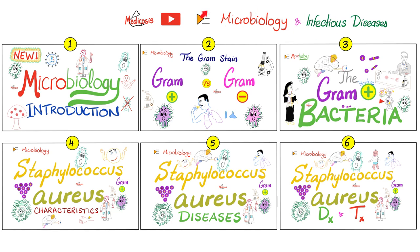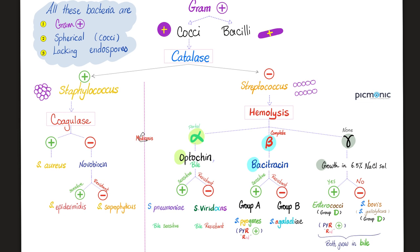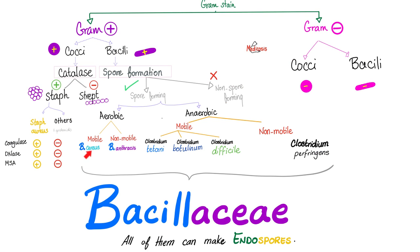Please watch the videos in this playlist in order. We talked about gram-positive cocci before. Today, we're discussing a gram-positive bacillus. Bacillus cereus is indeed a gram-positive rod that is spore-forming, aerobic, and motile.